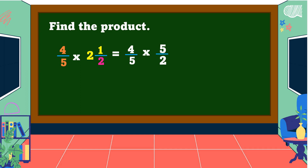Then we can use cancellation before we multiply both numerators and denominators. Four and two are both divisible by two: four divided by two is equal to two, two divided by two is equal to one. Also, five and five are both divisible by five: five divided by five is equal to one.